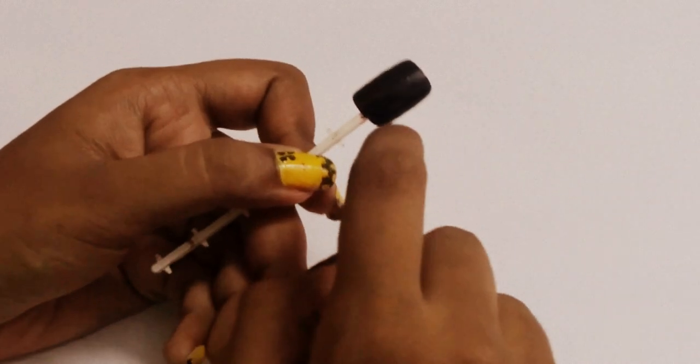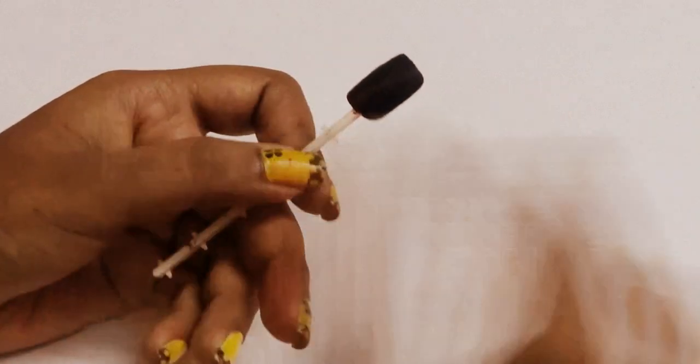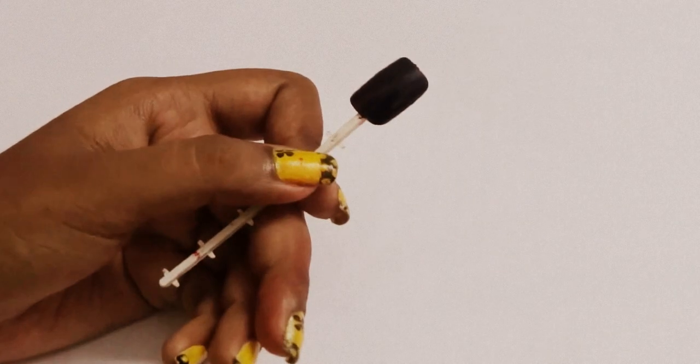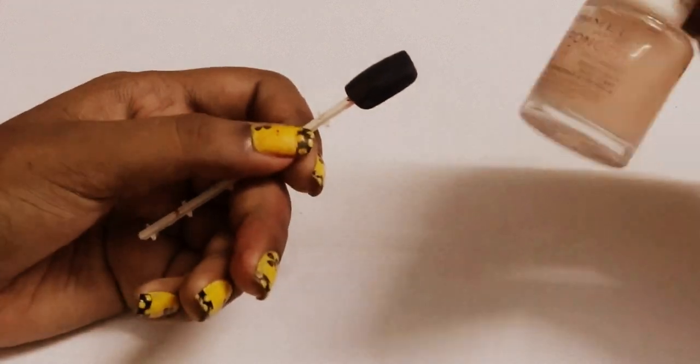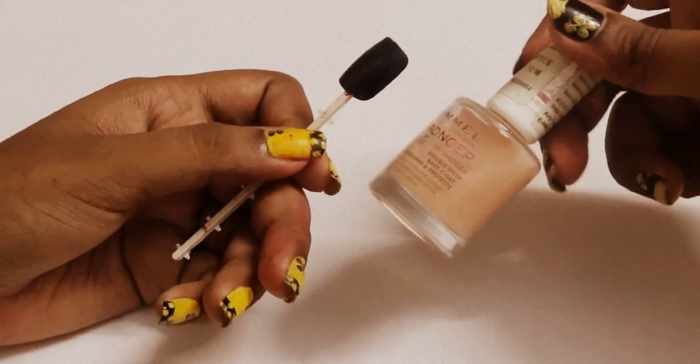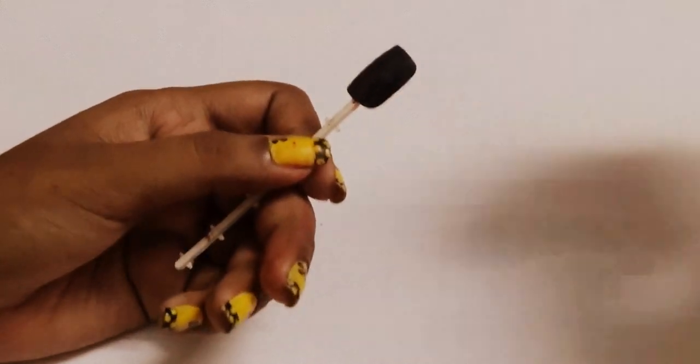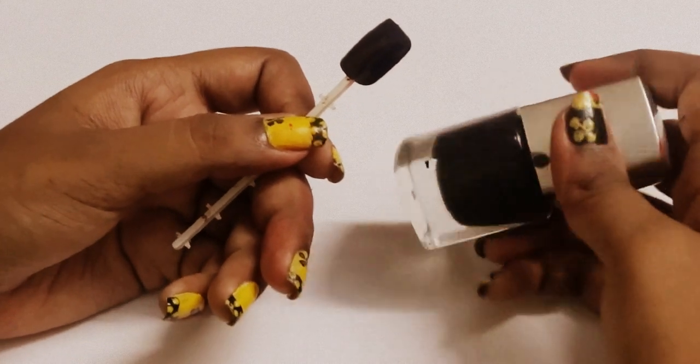Here I am with a false nail stuck onto a stick so that it's easy for me to paint on. I've given this nail a base coat - base coat from Rimmel Double Duty - and two coats of black nail polish.